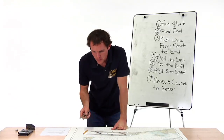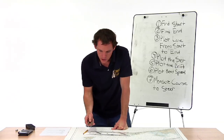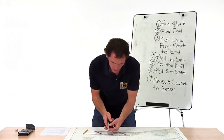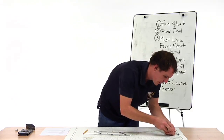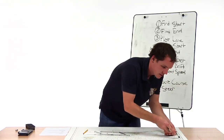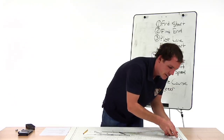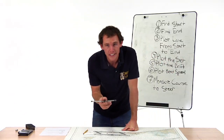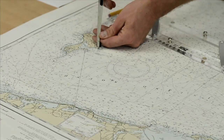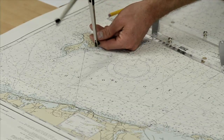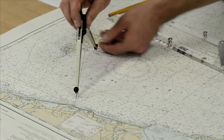Our boat is traveling at 8.5 knots, so we get 8.5 knots on our dividers from the latitude scale. Now our boat has a speed — it needs a direction. So we go from the end of our current vector and see where we cross the course we're intending to steer.